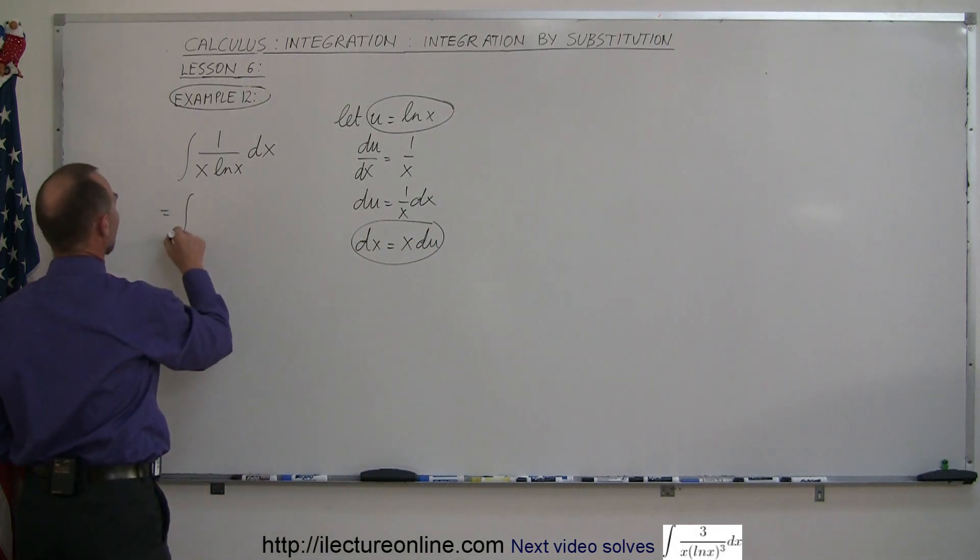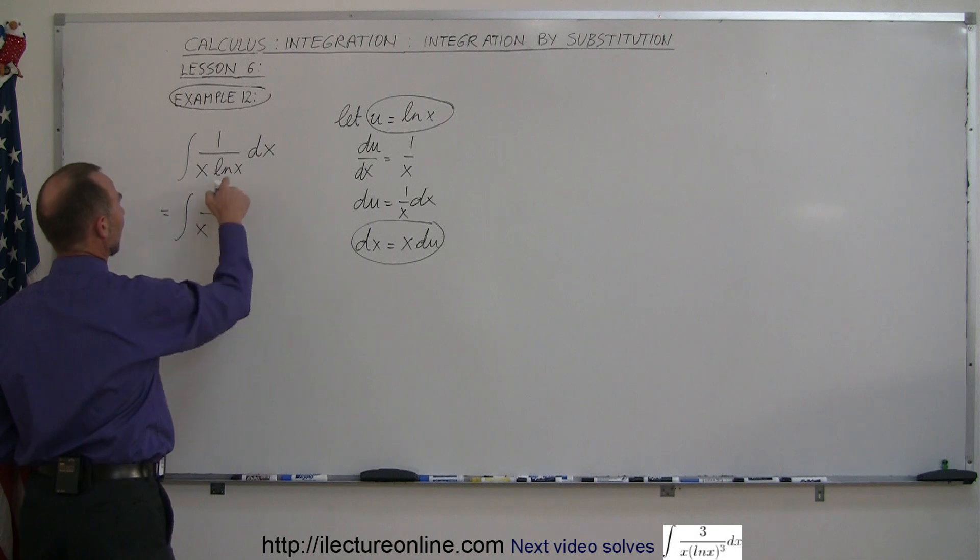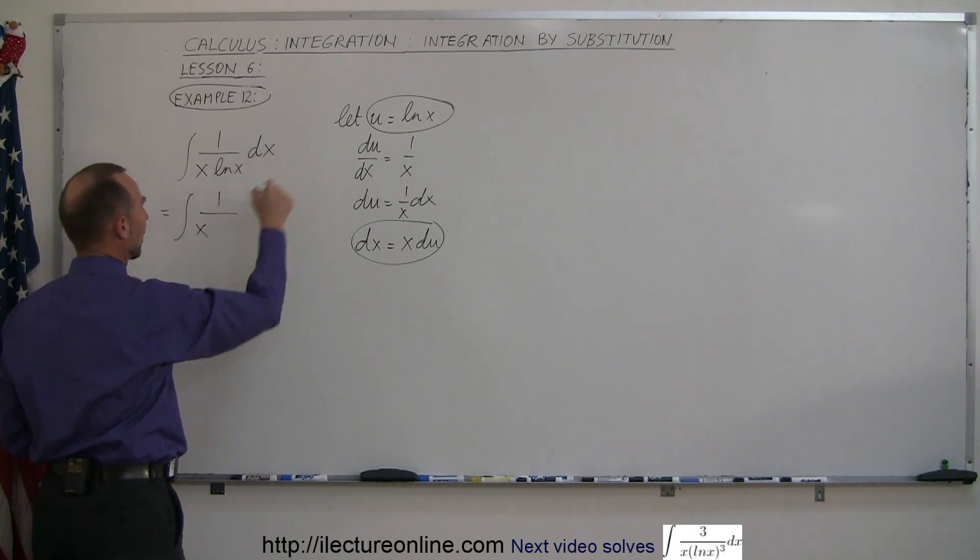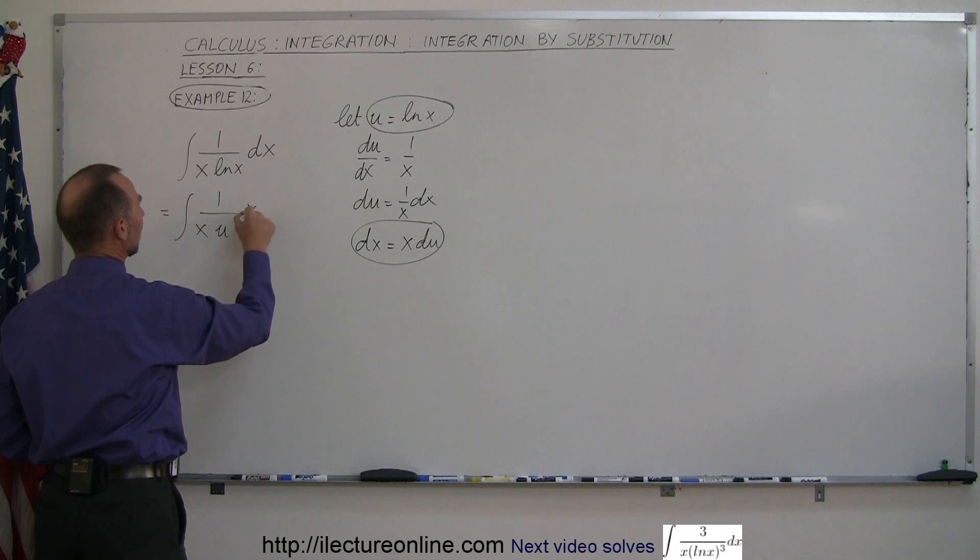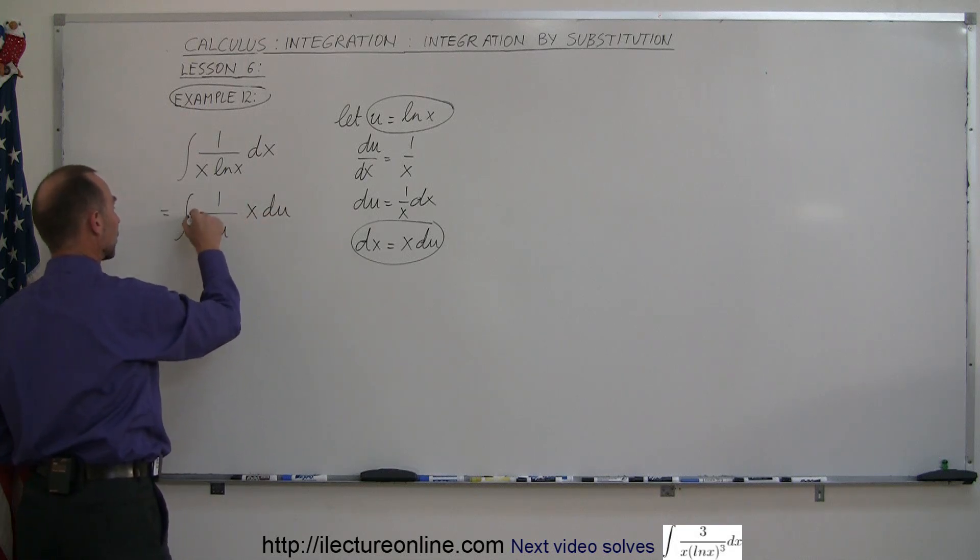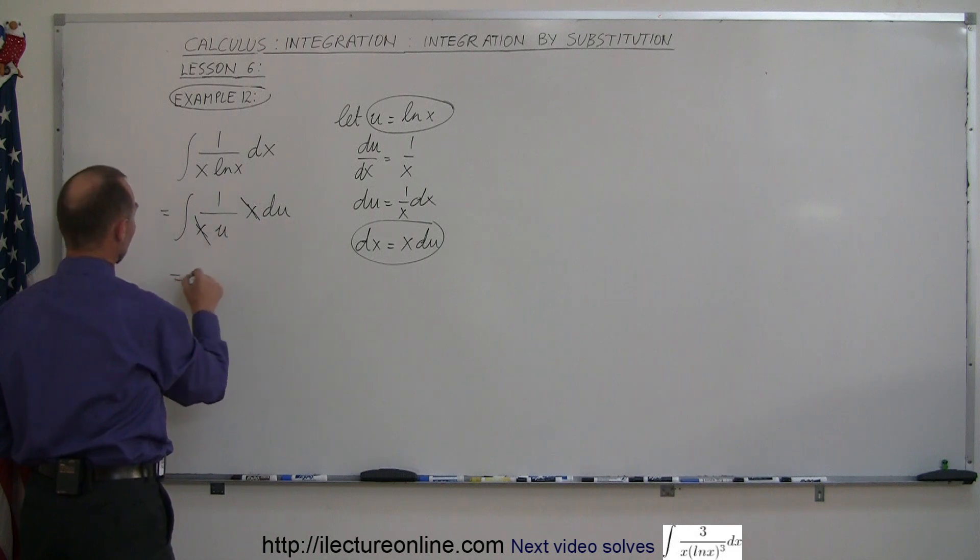So this is equal to the integral of 1 over x. Instead of writing the natural log of x, we write u. And instead of dx, we write x du. Notice the x in the numerator and the x in the denominator both cancel out, and we're left with the integral of 1 over u du.